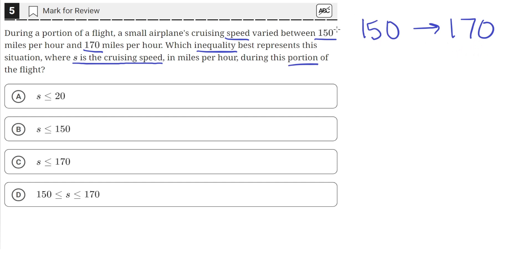So that means that the minimum speed of the plane, the cruising speed S, was at least 150, and the maximum speed was at most 170, since we're told that the speeds of the plane varied between and including these two numbers.